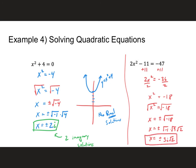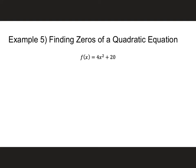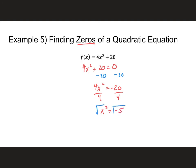Finding the zeros is the same thing — we just set the function equal to zero and solve. The process is identical. I subtract 20 from both sides, divide both sides by 4, and get x squared equals negative 5. Taking the square root of both sides gives x equals plus or minus the square root of negative 1 times the square root of 5. Final answer: plus or minus i√5.